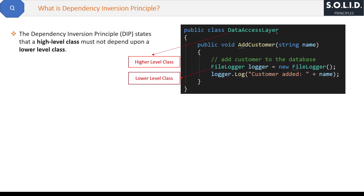Suppose we have a DataAccessLayer class responsible for adding a customer to the database. Instead of depending on an abstraction like an ILogger interface, it directly creates a FileLogger object and calls its log method to write a log message. Here, DataAccessLayer is the high-level class and FileLogger is the lower-level class. DataAccessLayer is tightly coupled with FileLogger, which violates the Dependency Inversion Principle.